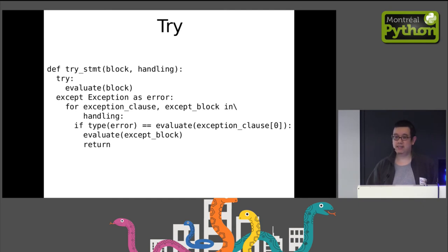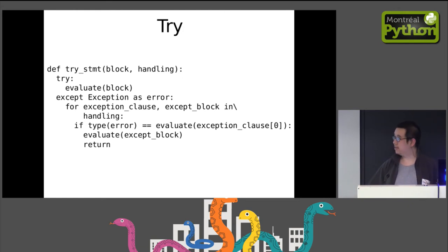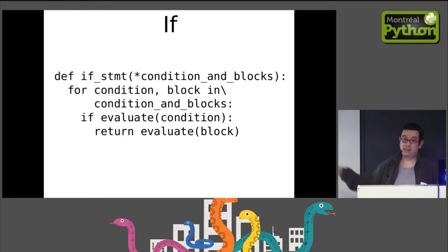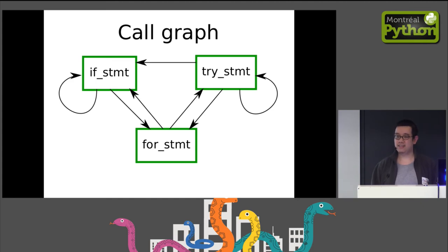Does anybody notice any problems with the last three definitions? If we have these in the library, this is going to loop indefinitely. When we translate the try_statement function into an AST, the first thing in it is a try_statement node. Our loop will look in simple_ast for a function called try_statement and call it — but that's this function, so it calls itself forever. The same problem exists with if_statement — it contains an if, so it loops too. The call graph: try_statement calls itself, if_statement calls itself, for_statement calls both, which call it back. We're in a bind.